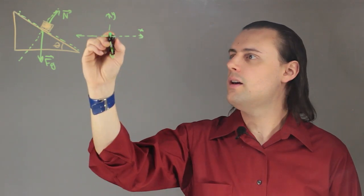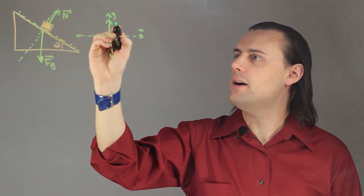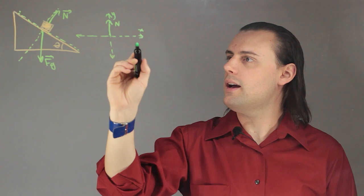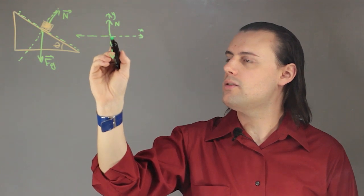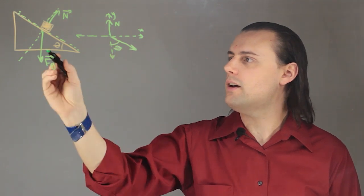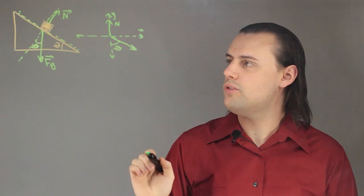So here along this y-axis I have my normal force and along my x-axis and y-axis I'm going to have the force of gravity off at an angle theta because this angle is the same as this one.